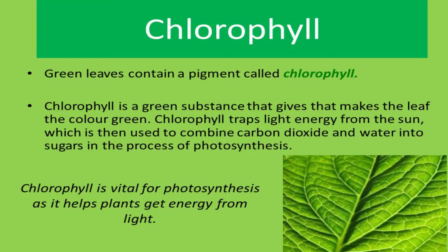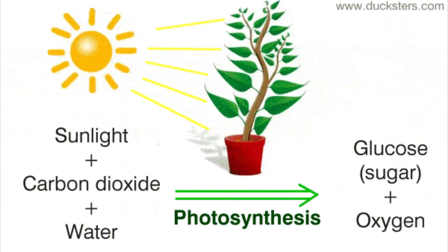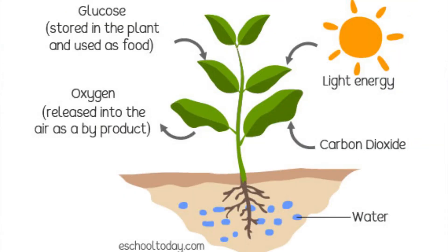In the leaves there is chlorophyll pigment. These pigments give green color to the leaves. They help in converting sunlight into nutrients that plants can use. This process results in the release of oxygen in the air, which is why it is very important for all living beings.